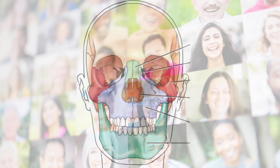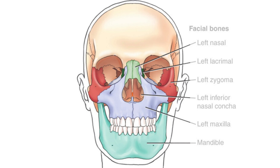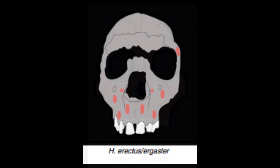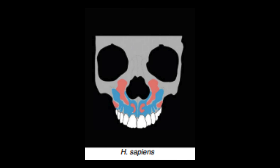The human face is a complex skeletal structure formed by 14 bones housing parts of various systems. To understand the evolutionary changes leading to the modern human face, we will look at extinct hominin taxa over the past 4 million years, from Ardipithecus to recent hominins.